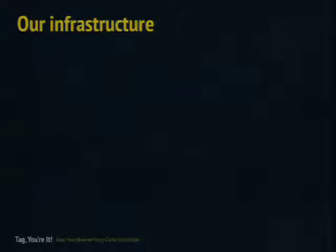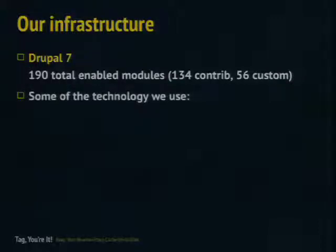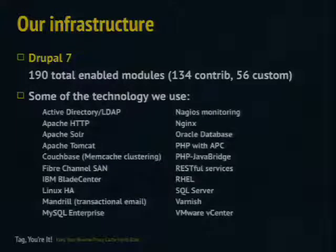Our infrastructure. When we decided to make this changeover, it was just before Drupal 7 was released, and we decided not to go with Drupal 6 for varying reasons. The thing we were concerned about with Drupal 7 was performance. So we decided to go with Drupal 7 but had to do our research and homework. We currently have 190 total enabled modules — about 134 contrib and 56 built by us. And here's some of the technology we use to run the site.